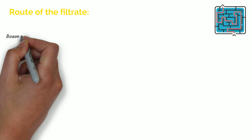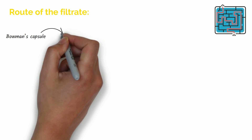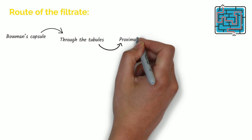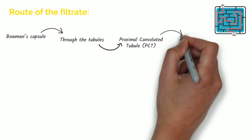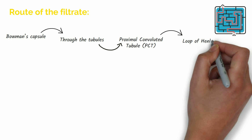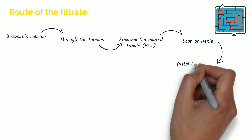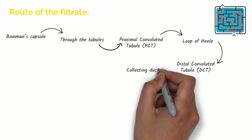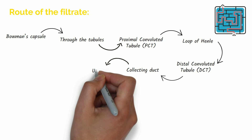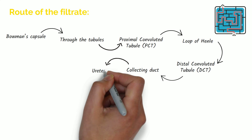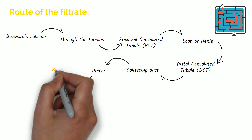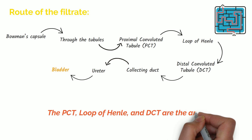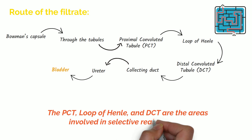From Bowman's capsule, filtrate passes through the tubules beginning in the proximal convoluted tubule, or PCT, then the loop of Henle, the distal convoluted tubule, or DCT, the collecting duct, and then into the ureter and the bladder. The PCT, loop of Henle and DCT are the areas involved in selective reabsorption.